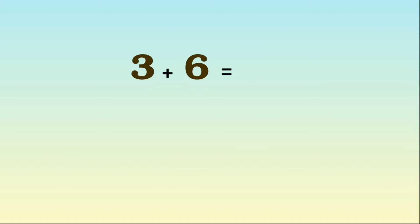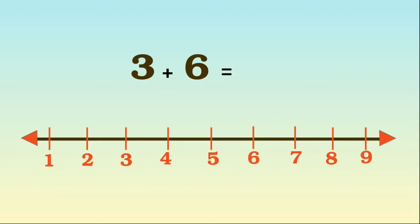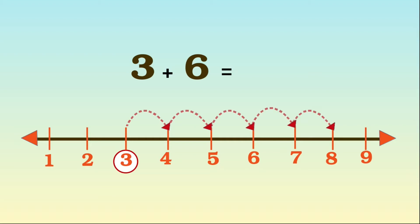Next we are going to find the sum of 3 plus 6 using number lines. So first we want to start with the number 3. Next we are going to jump 6 numbers towards the right. That is 1, 2, 3, 4, 5, 6.